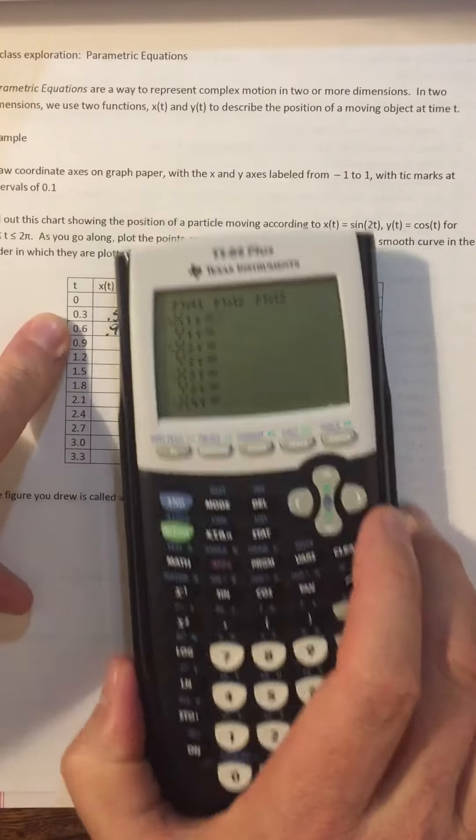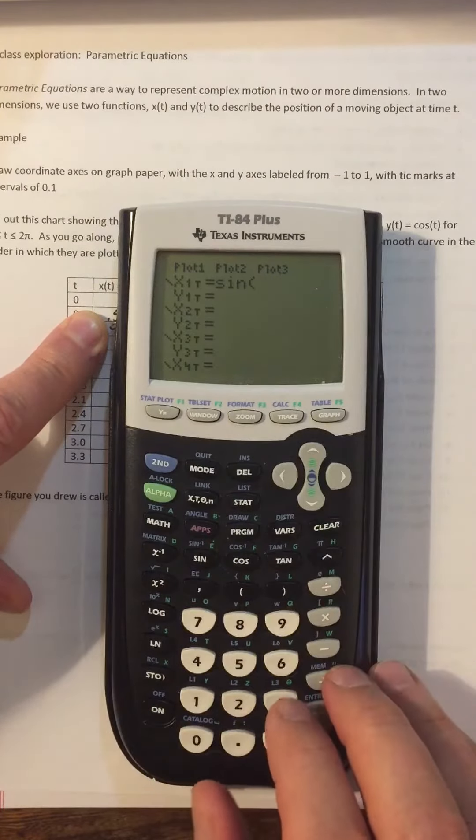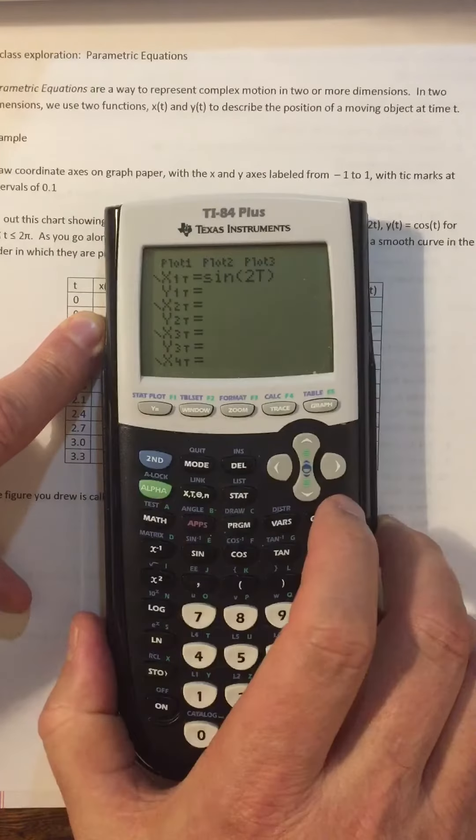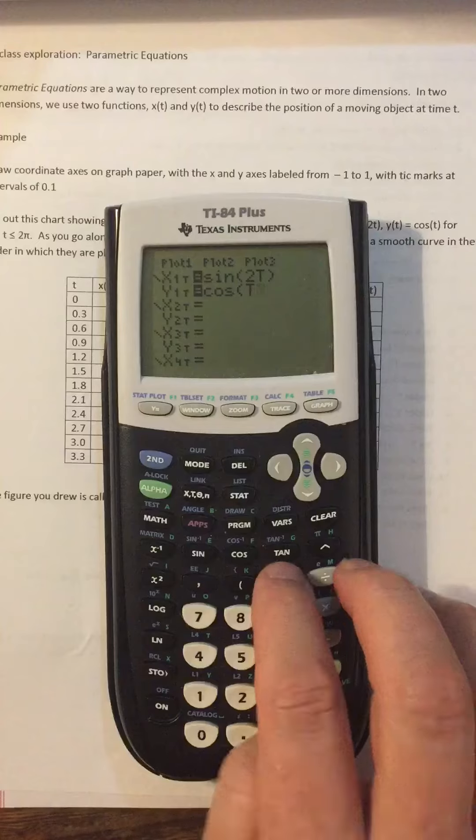So I'm going to put in these functions that we have, sine of 2t. So sine of 2t, and then the other one is just cosine of t for y, cosine of t.